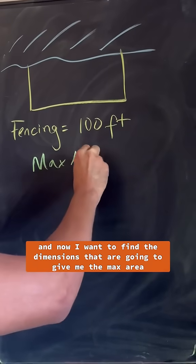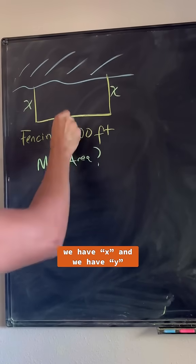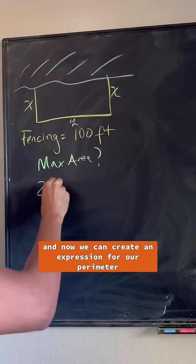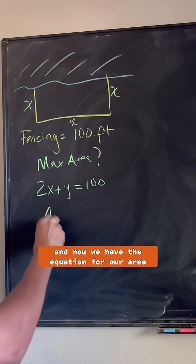So first I start labeling this value as x—we have x and we have y—and now we can create an expression for our perimeter, which is 2x plus y equals 100, and now we have the equation for our area.